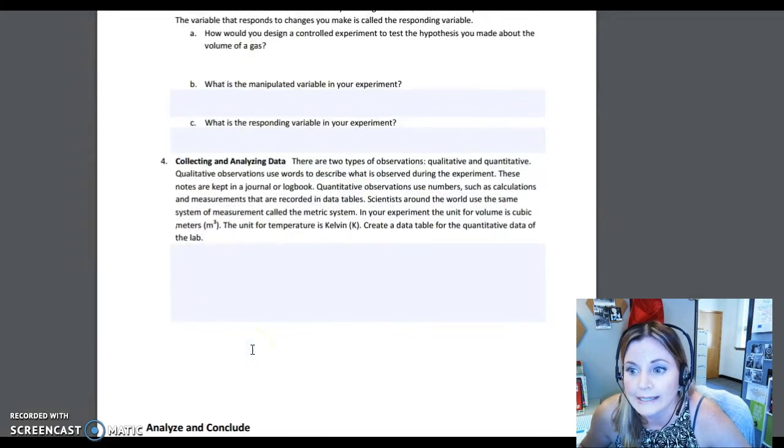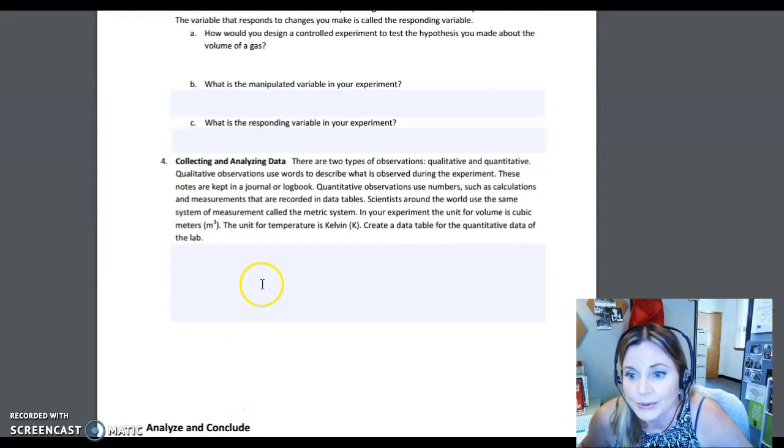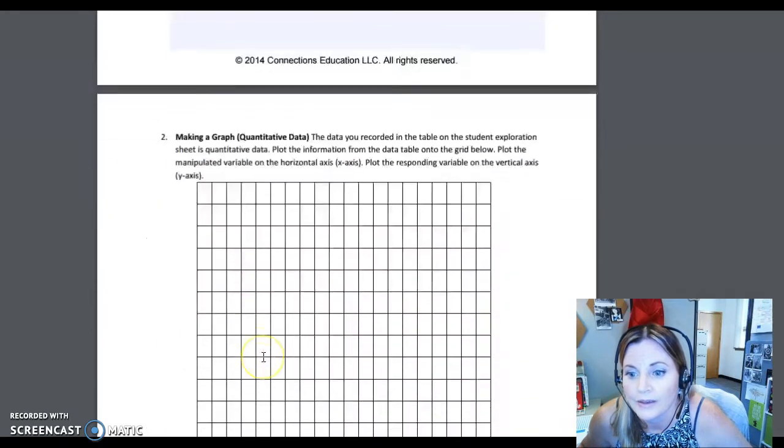It also talks about qualitative versus quantitative data. Qualitative data are observations that you make that cannot be quantified. They can't be put into a numerical expression. So, what do you see? What do you feel? What does it smell like? Obviously, you can't do that for something that's on a gizmo, but you can see the behavior of the molecules in your gizmo. Quantitative are things that are going to be able to be measured. You can measure things like temperature and pressure. So you can put those in number form and you can put those in a data table.